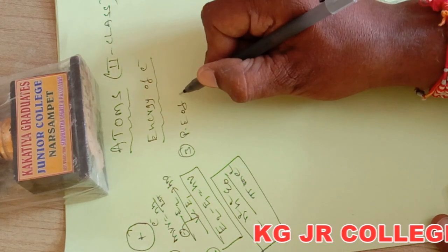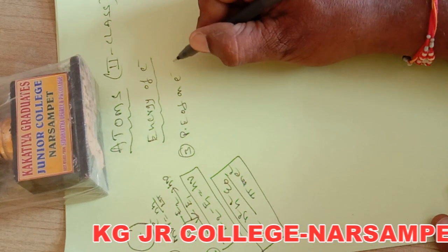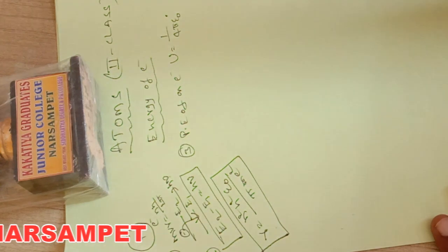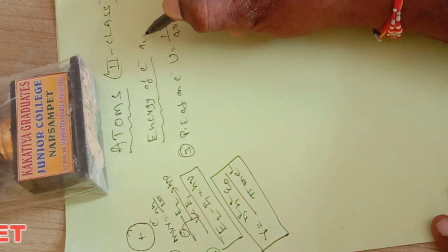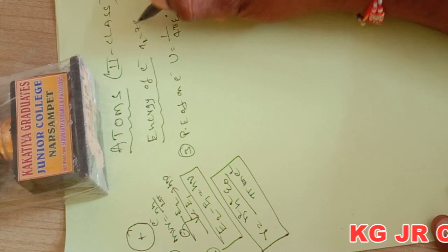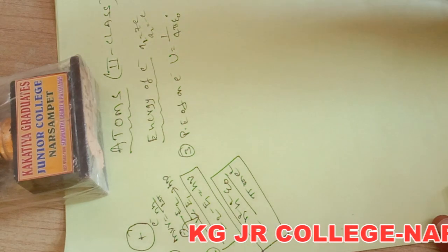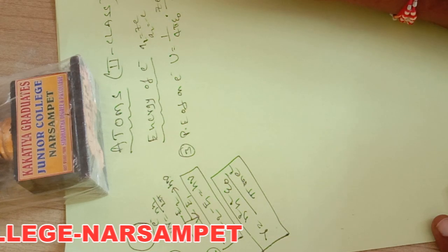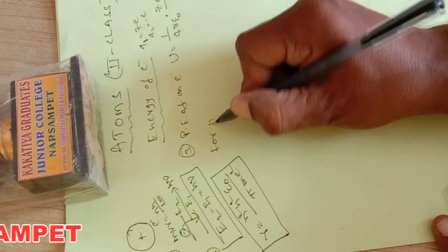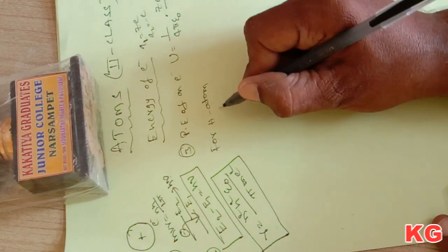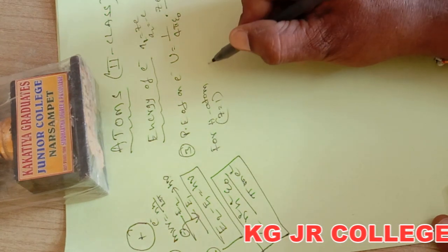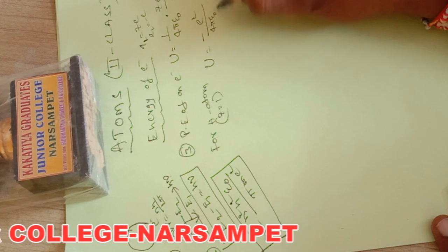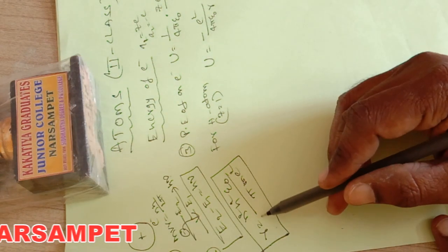First, the potential energy of an electron. The potential energy U equals 1 by 4π ε₀ times Q1 times Q2 by r. Here Q1 equals Ze and Q2 equals minus e — the charge of the electron. For hydrogen atom, z equals 1, so potential energy U equals minus e² by 4π ε₀ r.